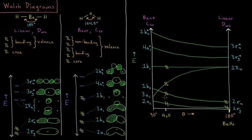This isn't, of course, drawn to scale, but that happens to be at 104.5 degrees where we get the minimum overall energy where the decrease in energy from this 3a1 orbital is equal and opposite to the increase from the 2a1 and 1b2 orbitals.